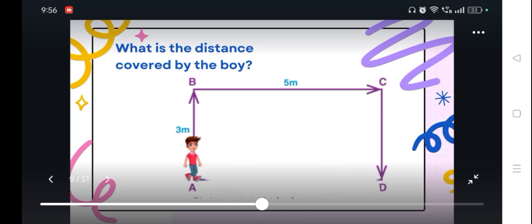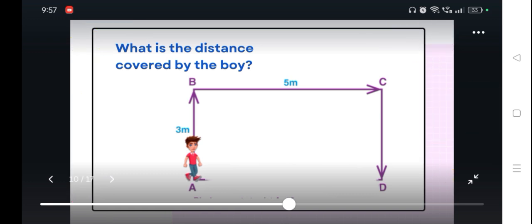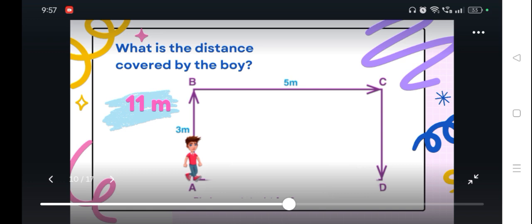In order for us to answer this problem, we are simply going to add the distance covered by the boy. So 3 meters A to B, 5 meters B to C, that's 8 meters. And then we assume that point C to D is 3 meters because that is a mirror or reflection of point A to B on the other side. So 8 plus 3 meters, the total distance covered is 11 meters.